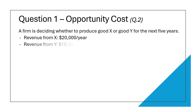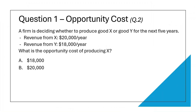The first question is on opportunity cost. A firm is deciding whether to produce good X or good Y for the next five years. The revenue from good X is $20,000 per year and revenue from good Y would be $18,000 per year. The question is: what is the opportunity cost of producing X? Opportunity cost is the revenue lost from not choosing the next best option.